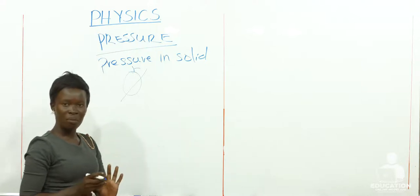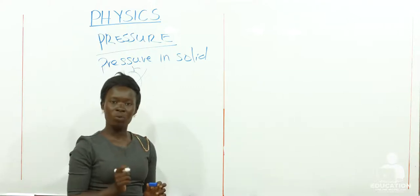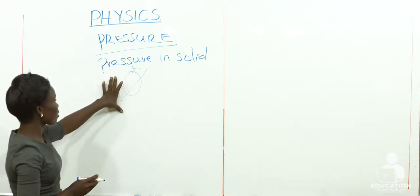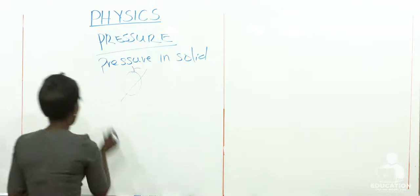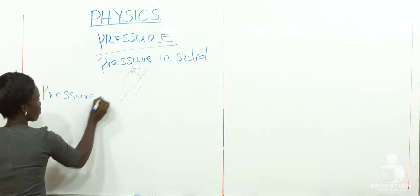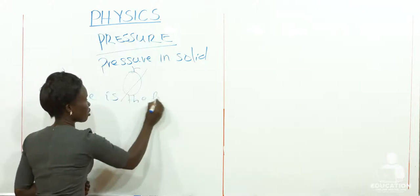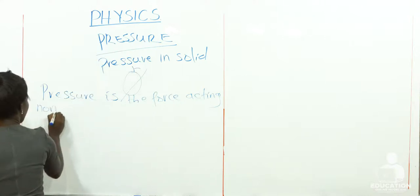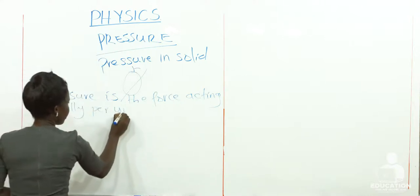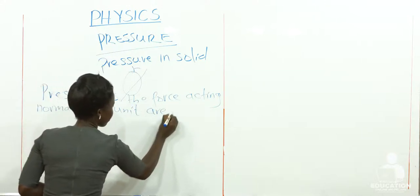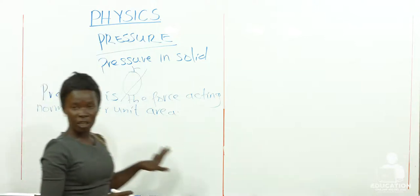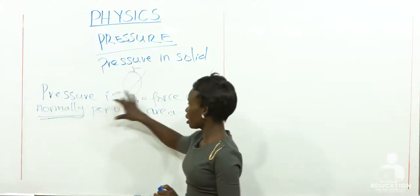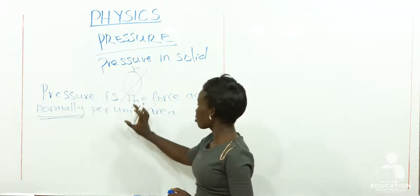If the area is huge, the pressure you are going to apply is small — that's why you find it very hard for the fruit to be cut through. So from this example, pressure is defined as the force acting normally per unit area. Whenever you are defining pressure, make sure you do not leave out the word 'normally' — it carries a very big meaning in the definition.